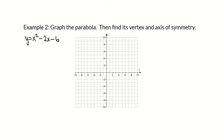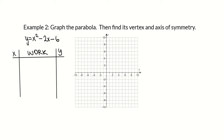Example 2: graph this parabola, then find its vertex and axis of symmetry. The equation is y equals x squared minus 2x minus 6. In order to graph this, we could change it to vertex form, or we can plot points that would fall on the graph using an xy table.